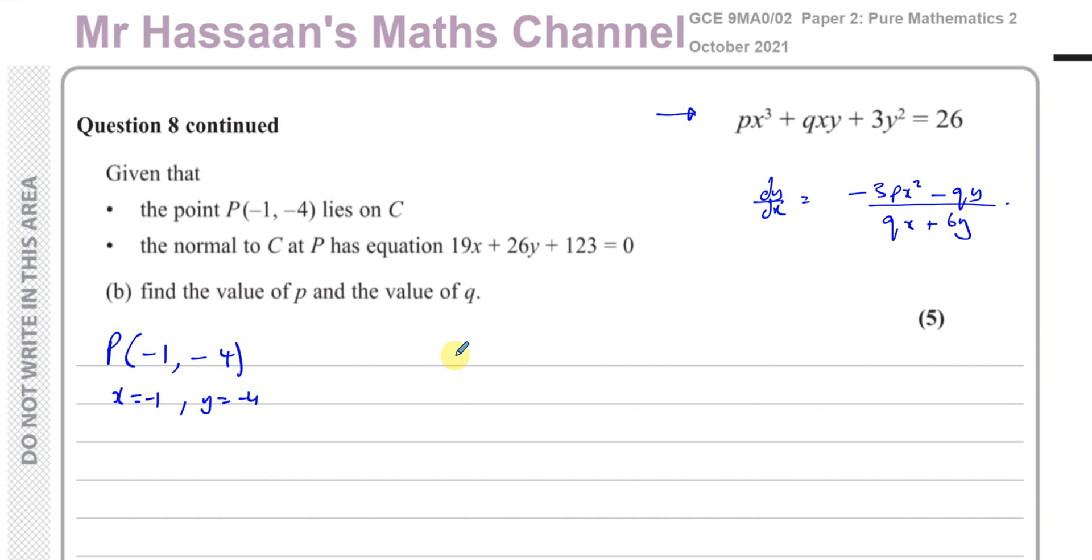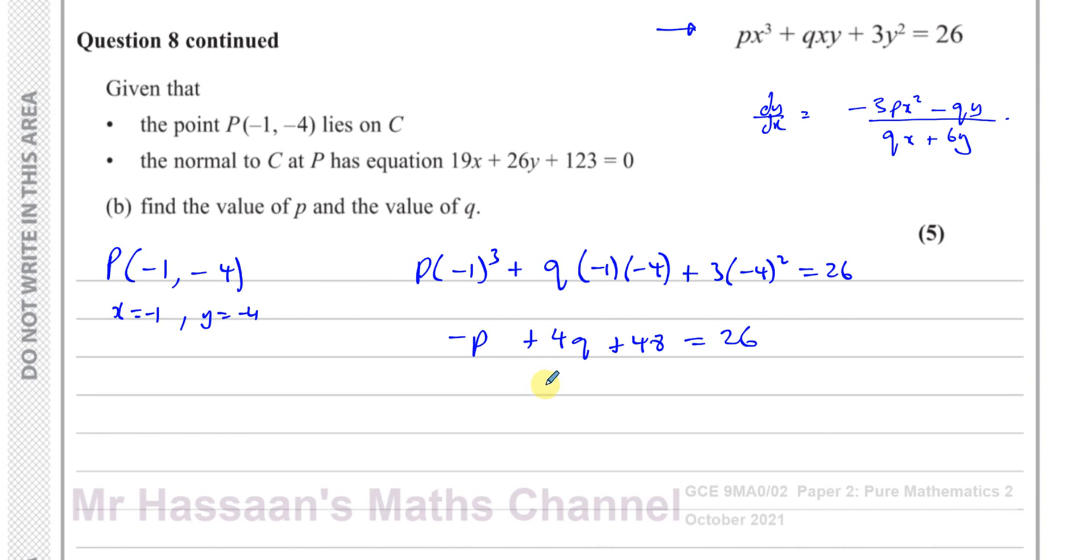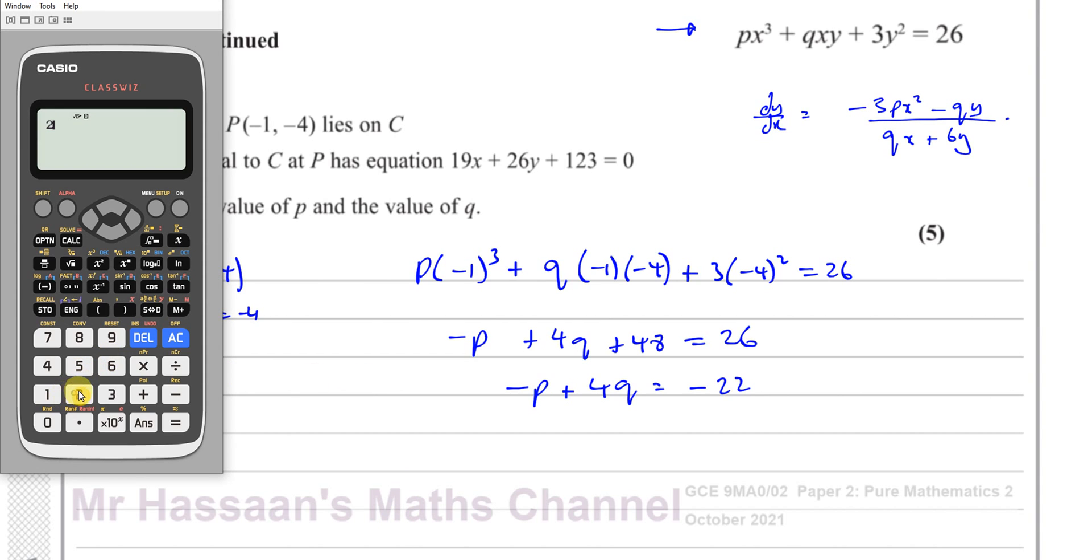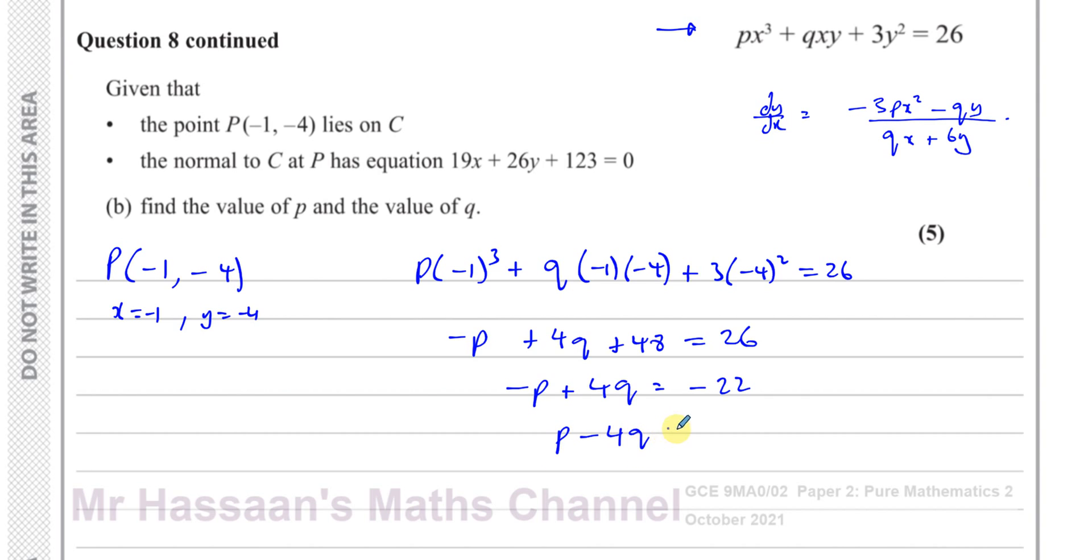So I can replace the x with -1. So I have p times (-1)³. And that's q times -1 and the y with -4. So q times -1 times -4 plus 3 times (-4)² equals 26. That will lead me to the equation. This is going to be -p + 4q. And that's 3 times 16, which is 48. Plus 48 equals 26. So I'm left with the equation, -p + 4q is equal to 26 - 48, which is -22. Let's just make sure of this. 26 - 48 = -22. Good. I can even write this as p - 4q equals 22.